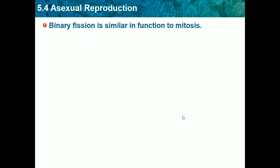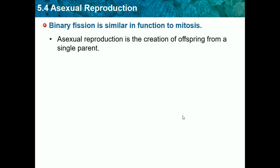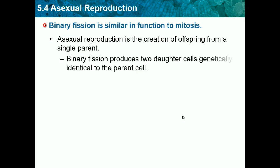Binary fission is similar in function to mitosis. In a previous video we learned about mitosis — mitosis is something your toe does. It produces a genetically identical cell, like it duplicates. That's the process of mitosis; it's like reproduction in cells. Asexual reproduction is the creation of offspring from a single parent, and binary fission is like a subsection of this.